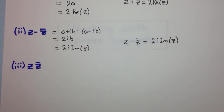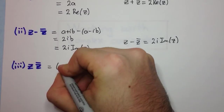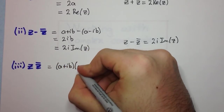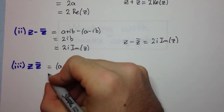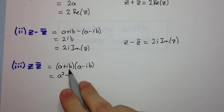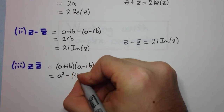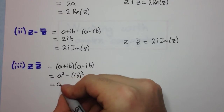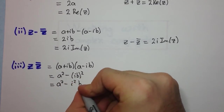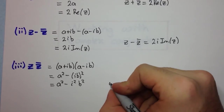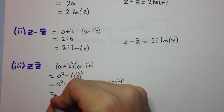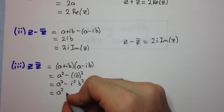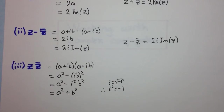Now let's have a look at z times z bar. This is a plus ib multiplied by a minus ib. You should notice this is a difference of two squares, so it's going to be the first term squared minus the second term all squared. Here we have a squared minus i squared b squared. Remember, by definition i equals the square root of minus 1, so i squared is minus 1. Therefore we have a squared minus minus 1 times b squared, which is a squared plus b squared.